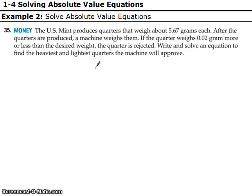All right, let's try a word problem. These are pretty tricky to set up. So I want to make sure to go over one of these with you. This is just straight out of one of the book problems. So, you'll have a couple more assigned as part of your problem set. U.S. Mint produces quarters that weigh about 5.67 grams each. After the quarters are produced, a machine weighs them. If a quarter weighs 0.02 grams more or less than the desired weight, the quarter is rejected. We're going to write and solve an equation to find the heaviest and lightest quarters the machine will approve. So we're going to have an absolute value because we have a plus and minus situation. And we're going to have a variable. Let's use W. We'll use W for weight. It's going to be something in there next to it, and it's going to be equal to something over here. And those somethings are going to be this 5.67 and the 0.02.